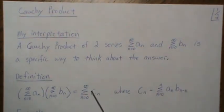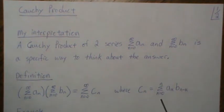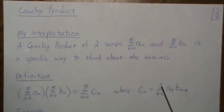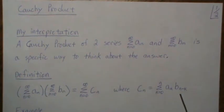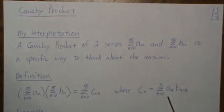Now these numbers are represented like this: it's the sum from k equals zero to n of aₖ times bₙ₋ₖ. This is the true definition of Cauchy product.